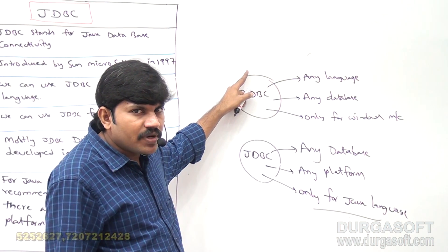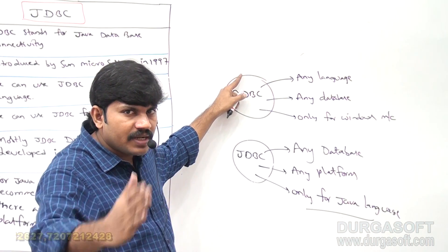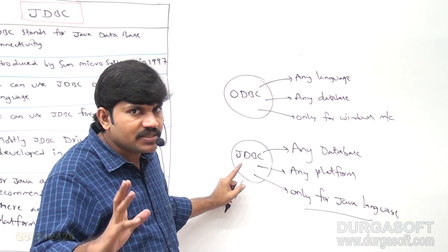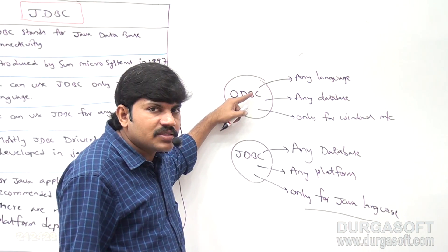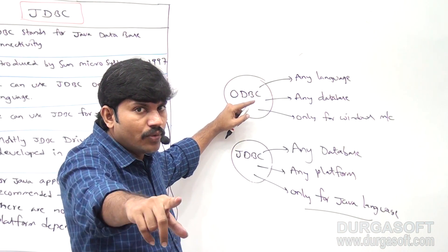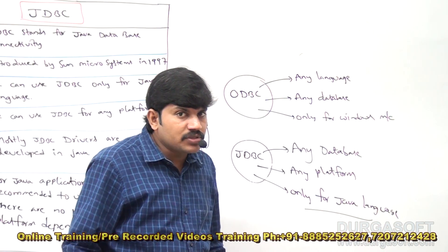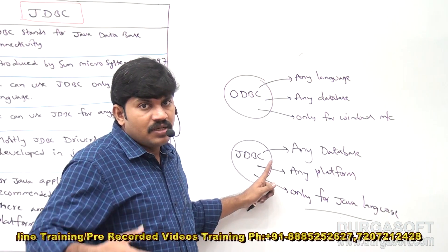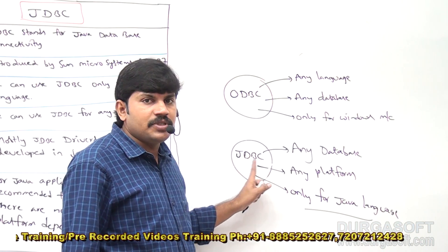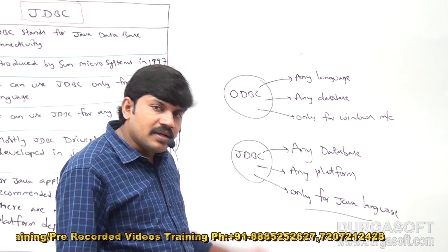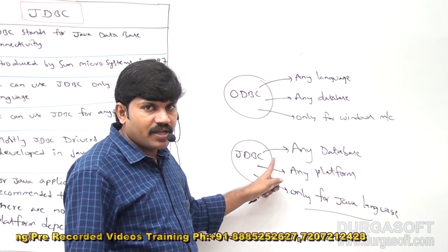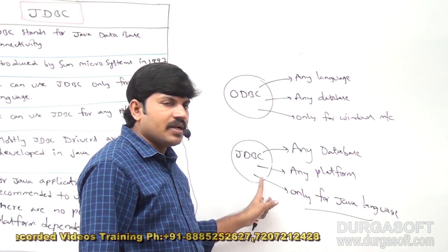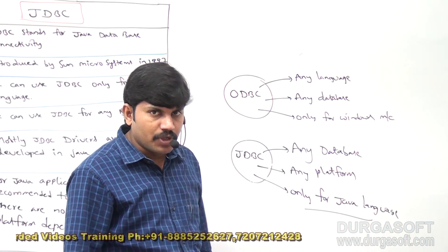What is ODBC? Open Database Connectivity. What is JDBC? Java Database Connectivity. ODBC concept was introduced by Microsoft in 1992, and JDBC concept was introduced by Sun Microsystems in 1997. Internally, ODBC was the reason for JDBC's introduction — almost all the same terminology was adapted from ODBC to JDBC.